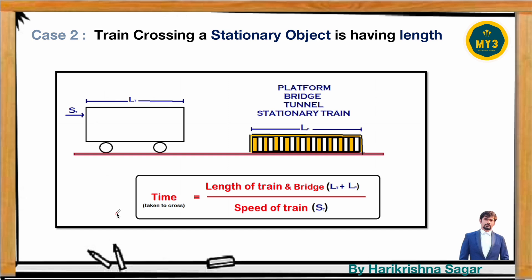Instead of bridge, they may say: train crossing a platform, train crossing a tunnel, or train crossing a stationary train. All these terms have some length, so you must consider the length of the object plus the length of the train as total distance covered, divided by speed of the train, to get total time taken.